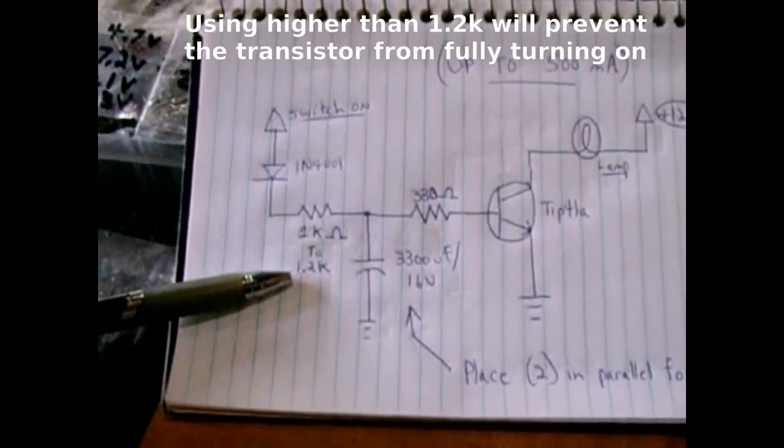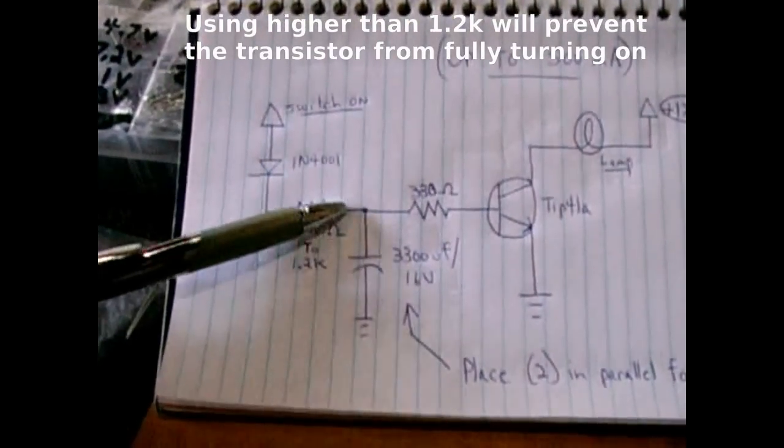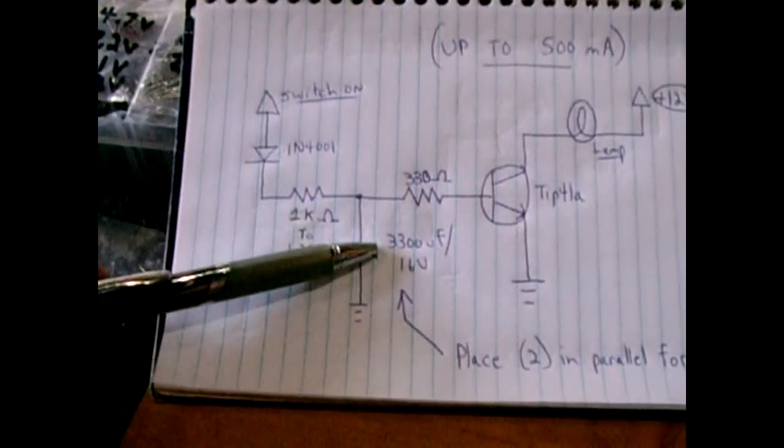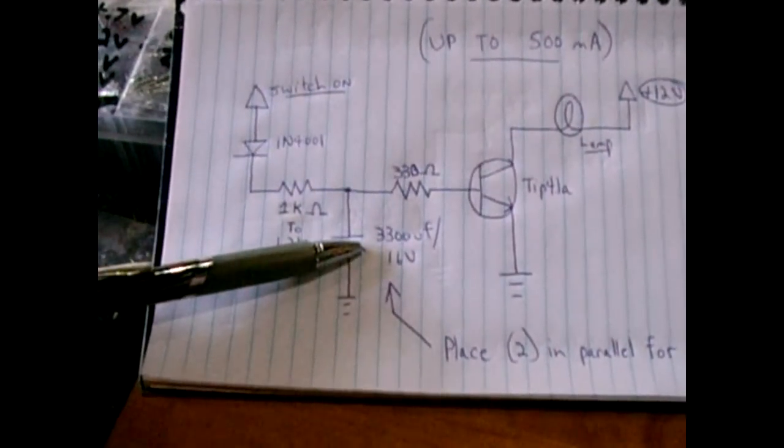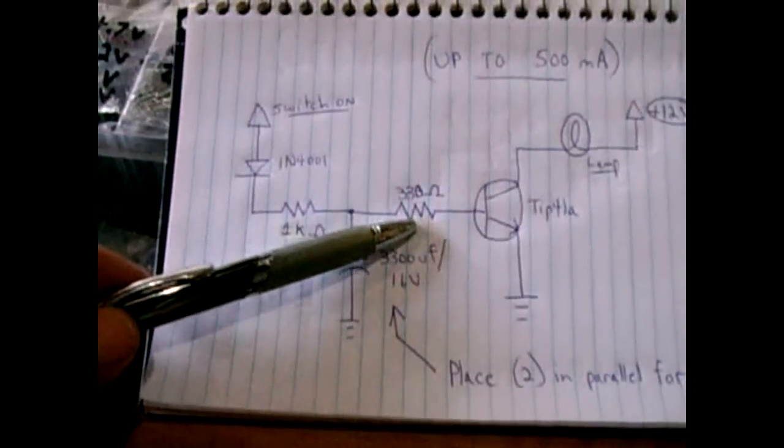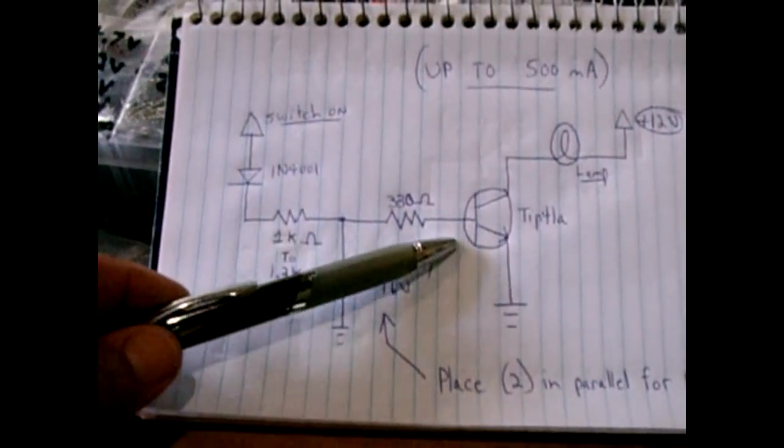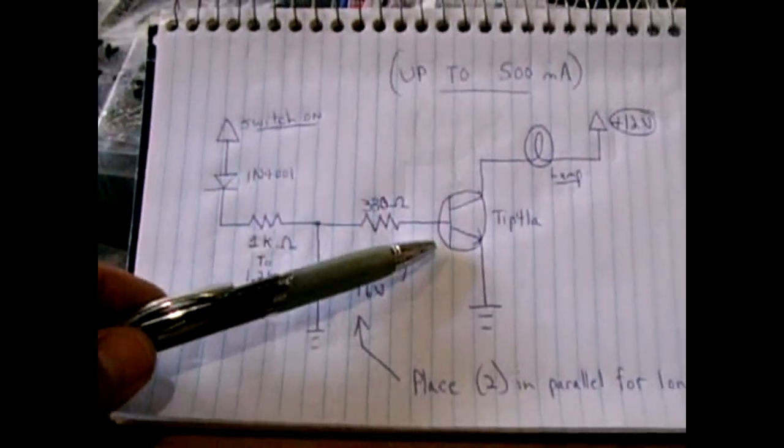Don't go higher than 1.2. The capacitor is around 3,300 microfarad. Two of these in parallel will give you a better result. A 330 ohm resistor leading into the base of the TIP41A.